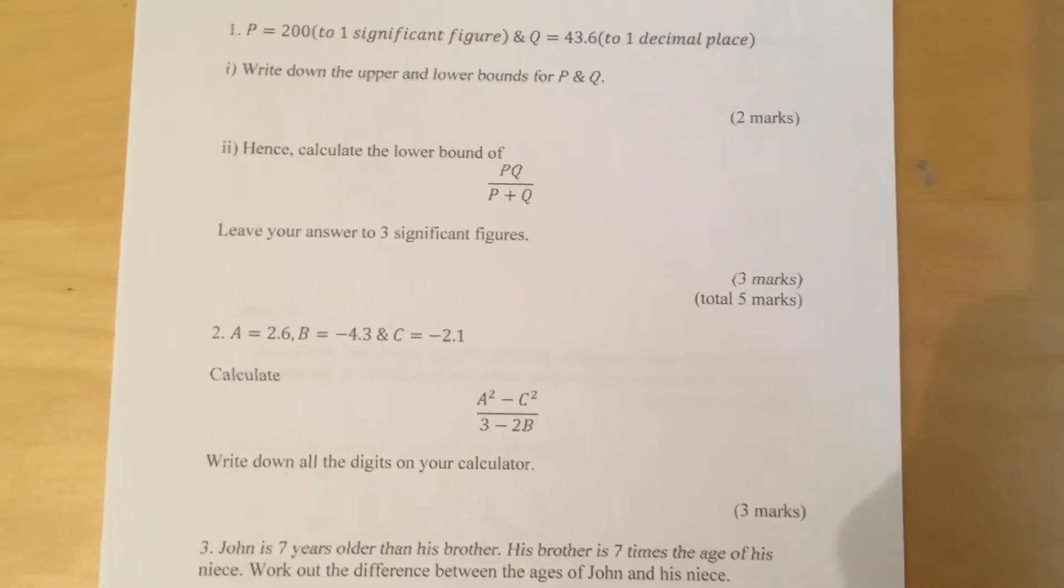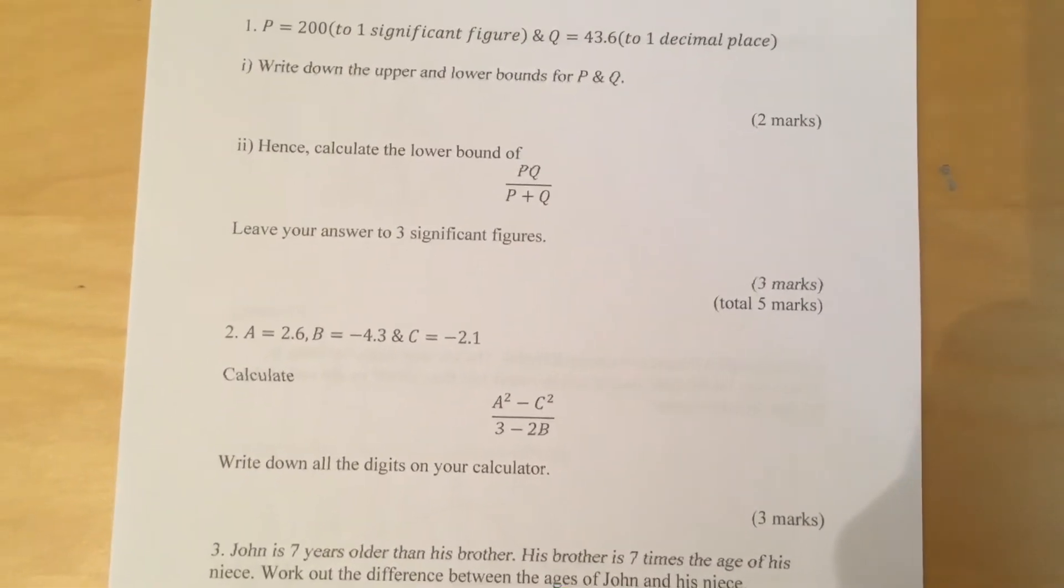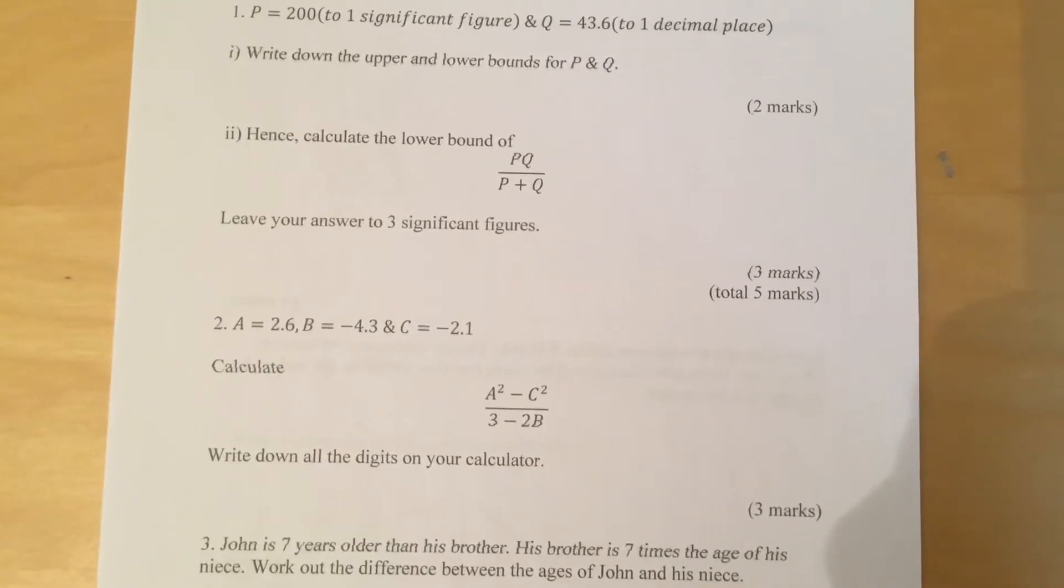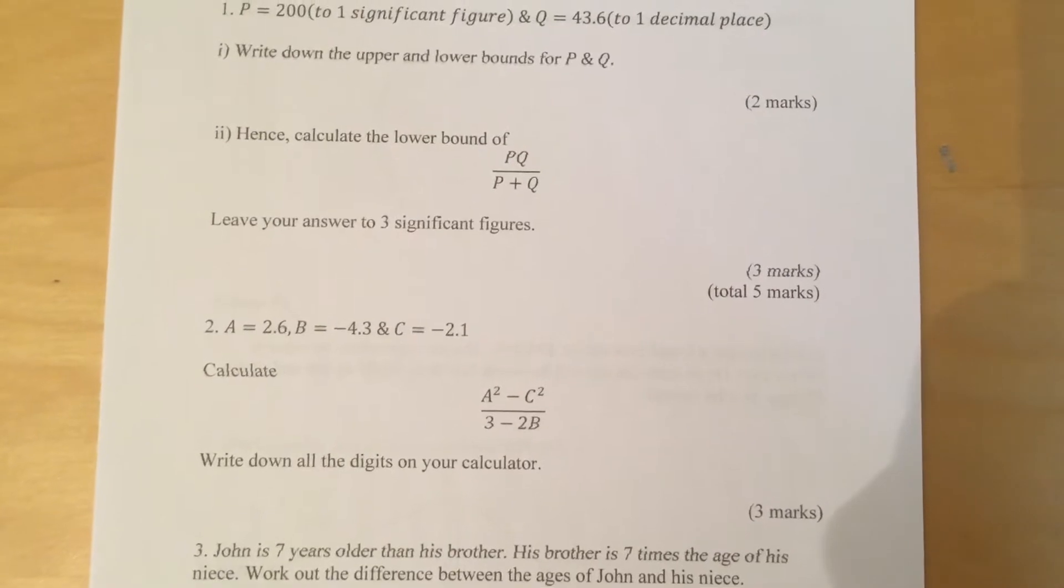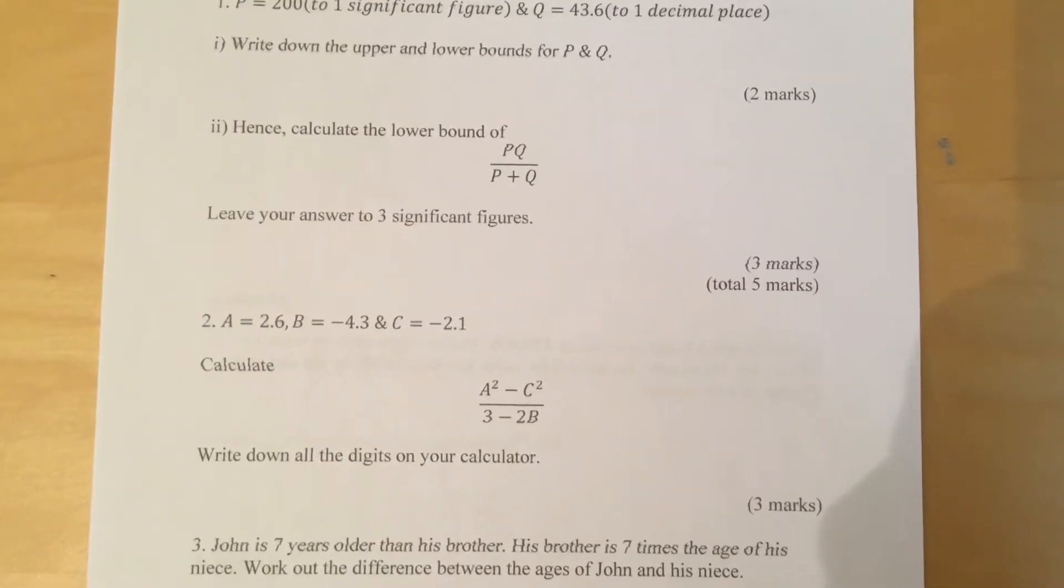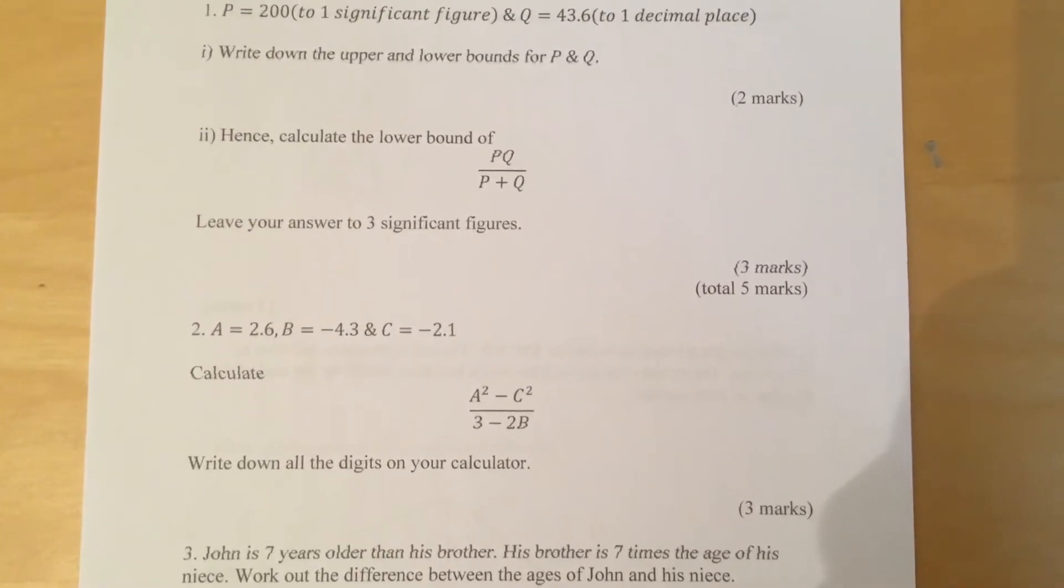Question 2. A is equal to 2.6, B is equal to minus 4.3, and C is equal to minus 2.1. Calculate the value of A squared minus C squared over 3 minus 2B. Write down all the digits on your calculator.